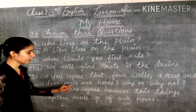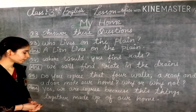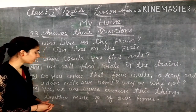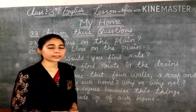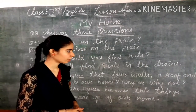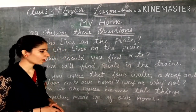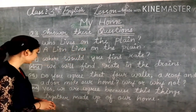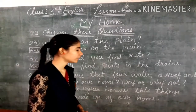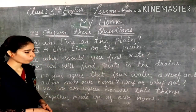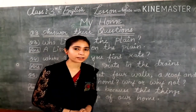Question number 5: Do you agree that 4 walls, a roof, and a door make our home? Why or why not? यानि आप सहमत हैं कि चार दीवार, एक छत, और एक दरवाजे से मिलकर हमारा घर बनता है? Answer: Yes, we are agreeing — हम इससे सहमत हैं — because these things together make up our home.